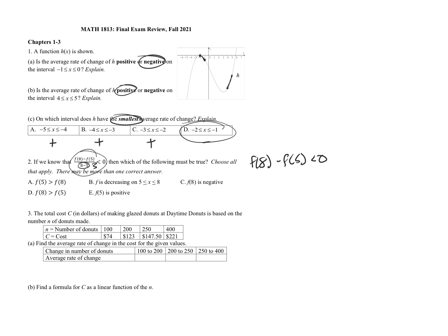What happens if we move that f(5) to the other side? If we add f(5) to both sides, we get f(5) is greater than f(8). So it's basically saying that if f(8) minus f(5) is negative, that means f(8) has to be smaller. So that's one of our answers.